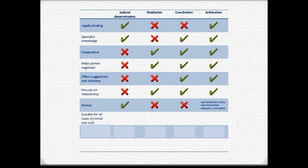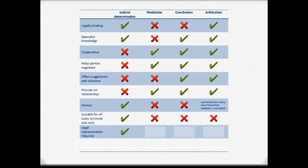In terms of being suitable for all types of cases: judicial determination is the only method suitable for criminal cases. The other three focus on civil disputes — mediation and conciliation on small civil disputes, and arbitration on commercial civil disputes. Regarding legal representation: judicial determination requires it due to strict rules of evidence and procedure. Mediation, conciliation, and arbitration generally do not require legal representation. Finally, in terms of cost and speed: judicial determination is the most expensive and slowest method. Mediation, conciliation, and arbitration are all much faster and cheaper because there's no need for legal representation.